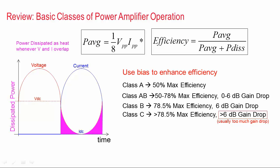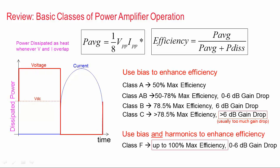So another approach to improve efficiency is to use the harmonic terminations to shape the waveform. For example, if we make the voltage a square wave, this could give us up to 100% efficiency ideally, and that's called Class F operation.